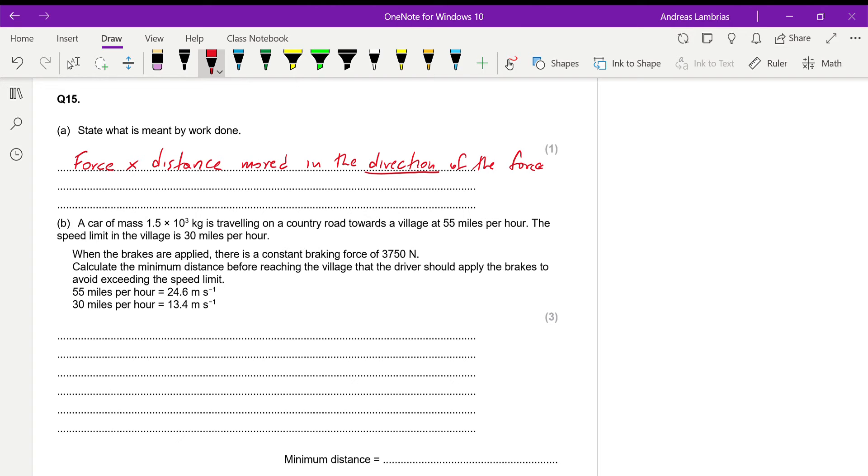Then we have a car of that specific mass that is traveling on a country road with 55 miles per hour, and it's giving us here what is the equivalent for meters per second. The speed limit is 30 miles per hour, which is that. The brakes are applied, and that's applying a constant force of 3,750 newtons. We need to find the distance, the minimum distance that this force should be applied until the driver brakes to avoid exceeding the speed limit. So how are we going to approach this question?